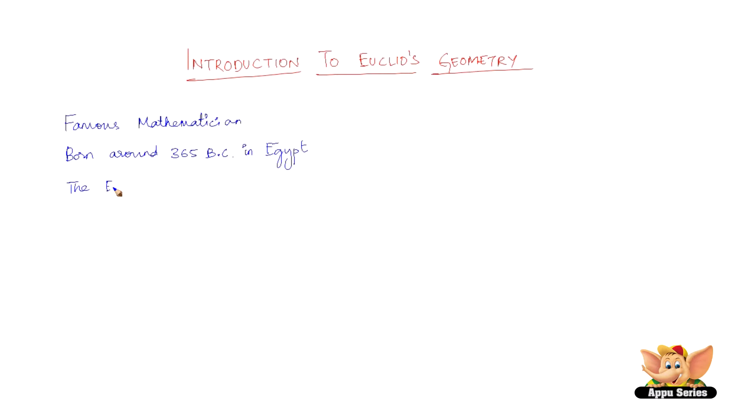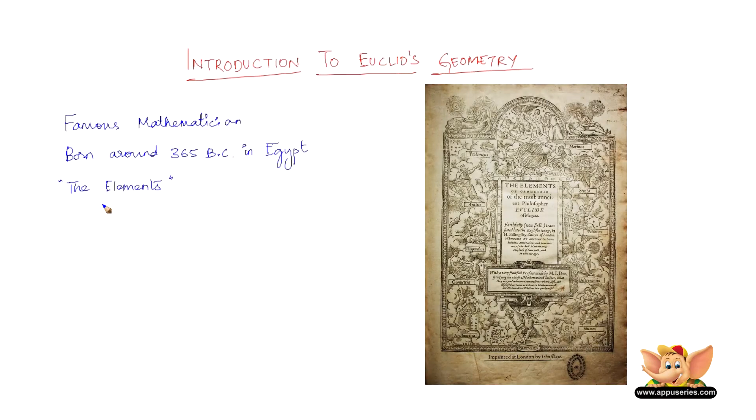Euclid's most famous work is his collection of 13 books dealing with geometry, which is called the Elements. These books are said to be the most studied and printed book apart from the Bible. Euclid is considered to be the father of geometry.